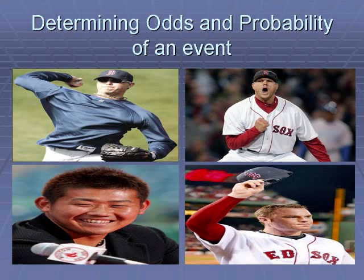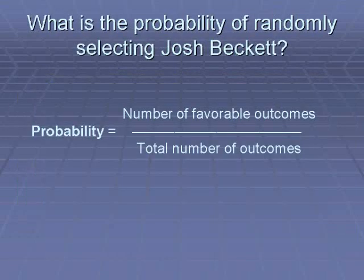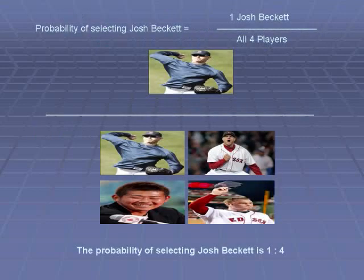The first question we want to answer is: what's the probability of randomly selecting Josh Beckett? Notice that probability is a fraction — in the numerator it's the number of favorable outcomes, and in the denominator it's the total number of outcomes. The probability of selecting Josh Beckett would be one Josh Beckett over all four players, so one to four. There's a one in four chance of getting Josh Beckett.